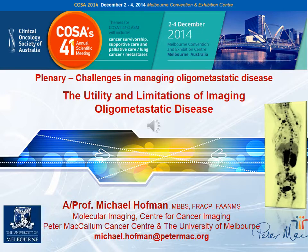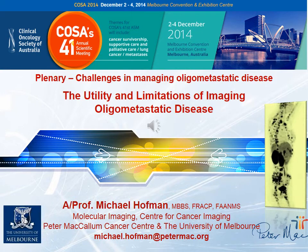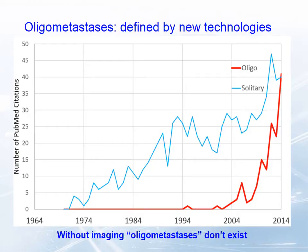I'm going to talk about the utility and limitations of imaging oligometastatic disease. I'm glad I wasn't doing this talk 20 years ago because the term oligometastatic disease first appeared in the literature in 1995, and wasn't widely used again for years. Perhaps that's because prior to advances in imaging technology and the therapies that can be used to treat these, people weren't foolish enough to really believe that oligometastatic disease even existed.